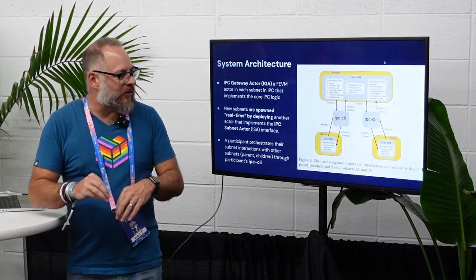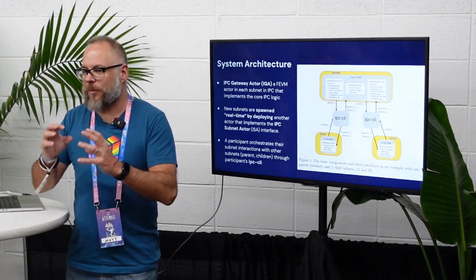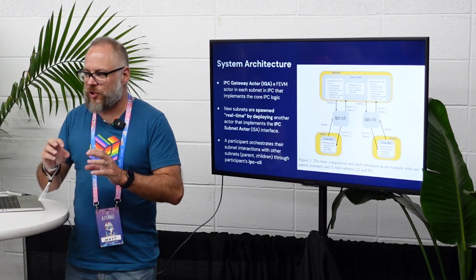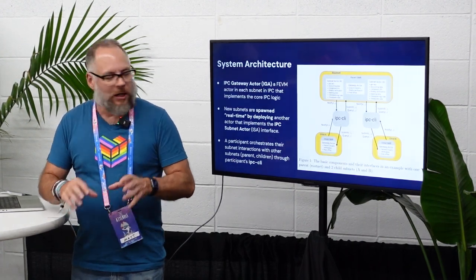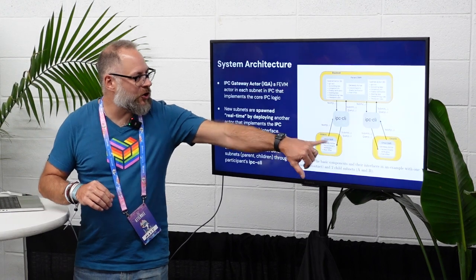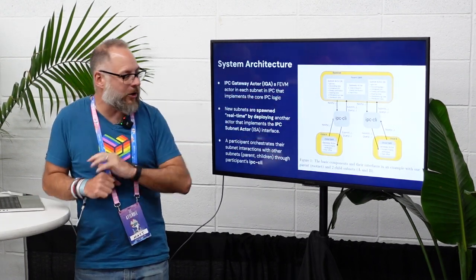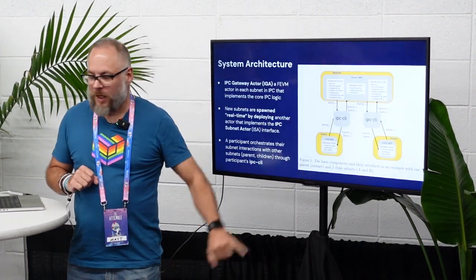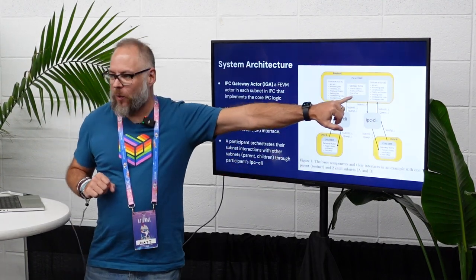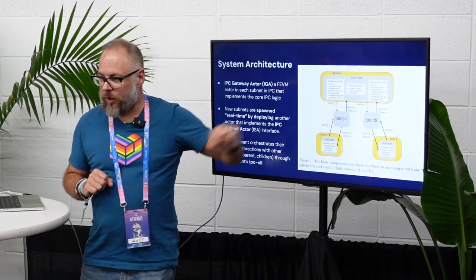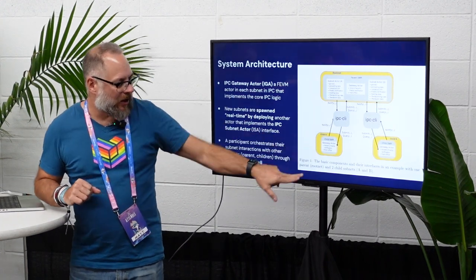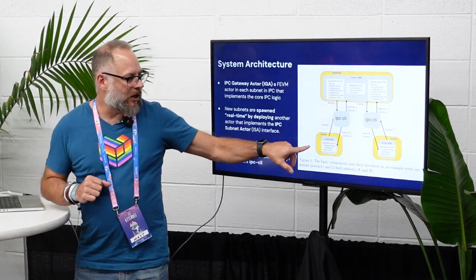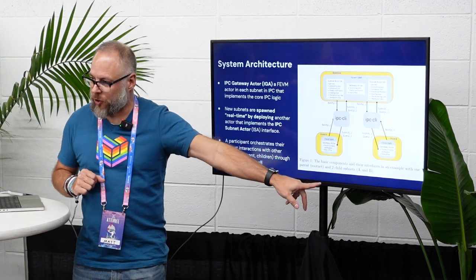Getting into the technicals of subnet message passing, GMP — general message passing. The subnets consist of a number of smart contracts. For each subnet you have a subnet actor — one per child subnet — and then there's the gateway actor, of which there is one per root network. So if you were to build another set of children off of child A, again there would be one gateway actor and several subnet actors, one for each of the children.